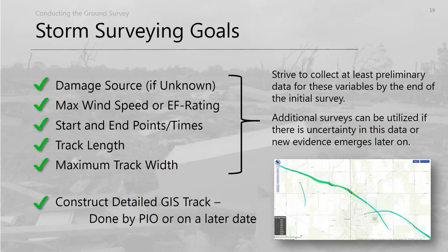After the first day of the survey, the key things to wrap up for releasing to the media are: is it a tornado or not, the max EF rating, rough start and end point times, the length, and the rough maximum track width. If you're not comfortable with those results and have time, do an additional survey — sometimes three or four surveys are needed to get it right. Then use the DAT to construct the GIS track.